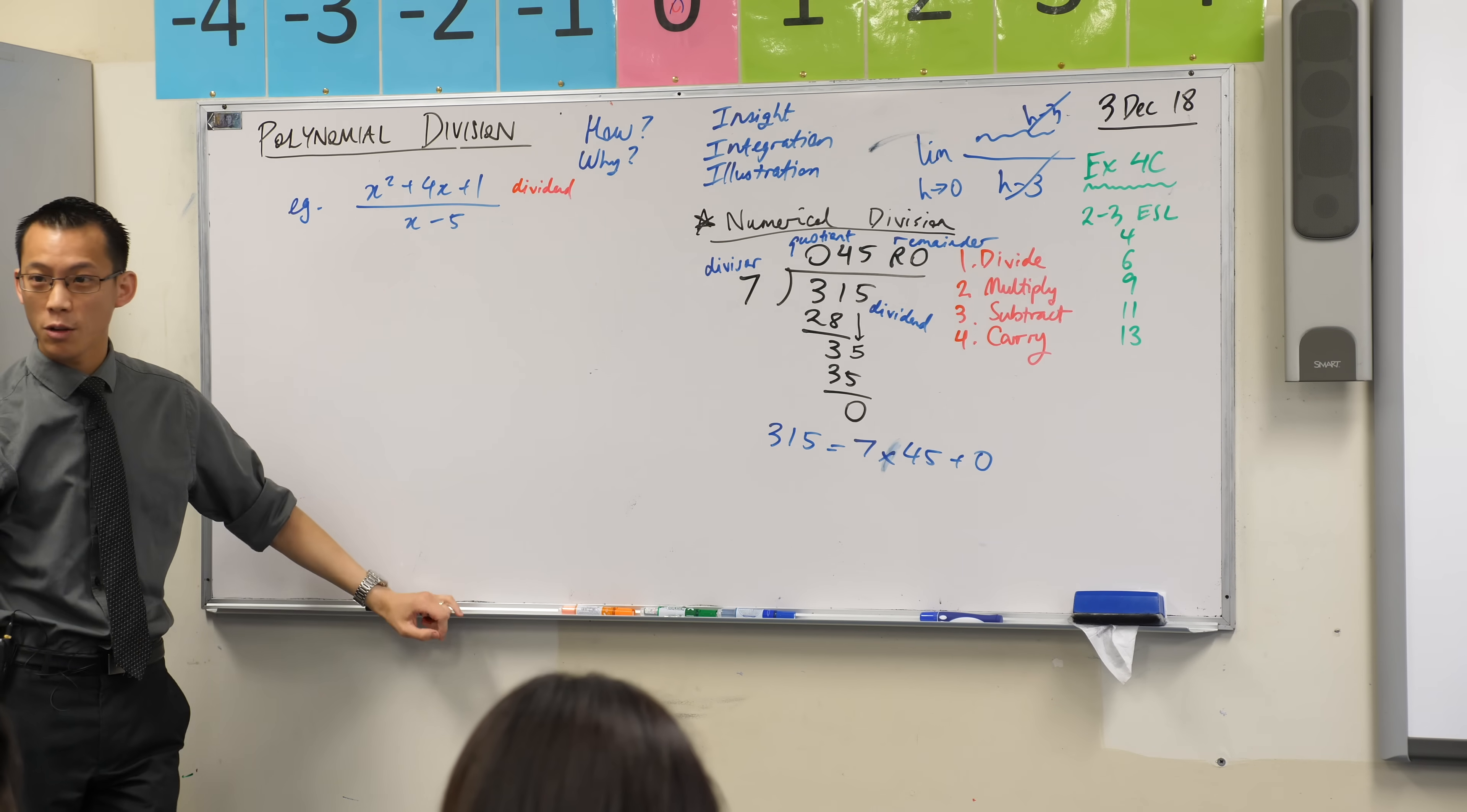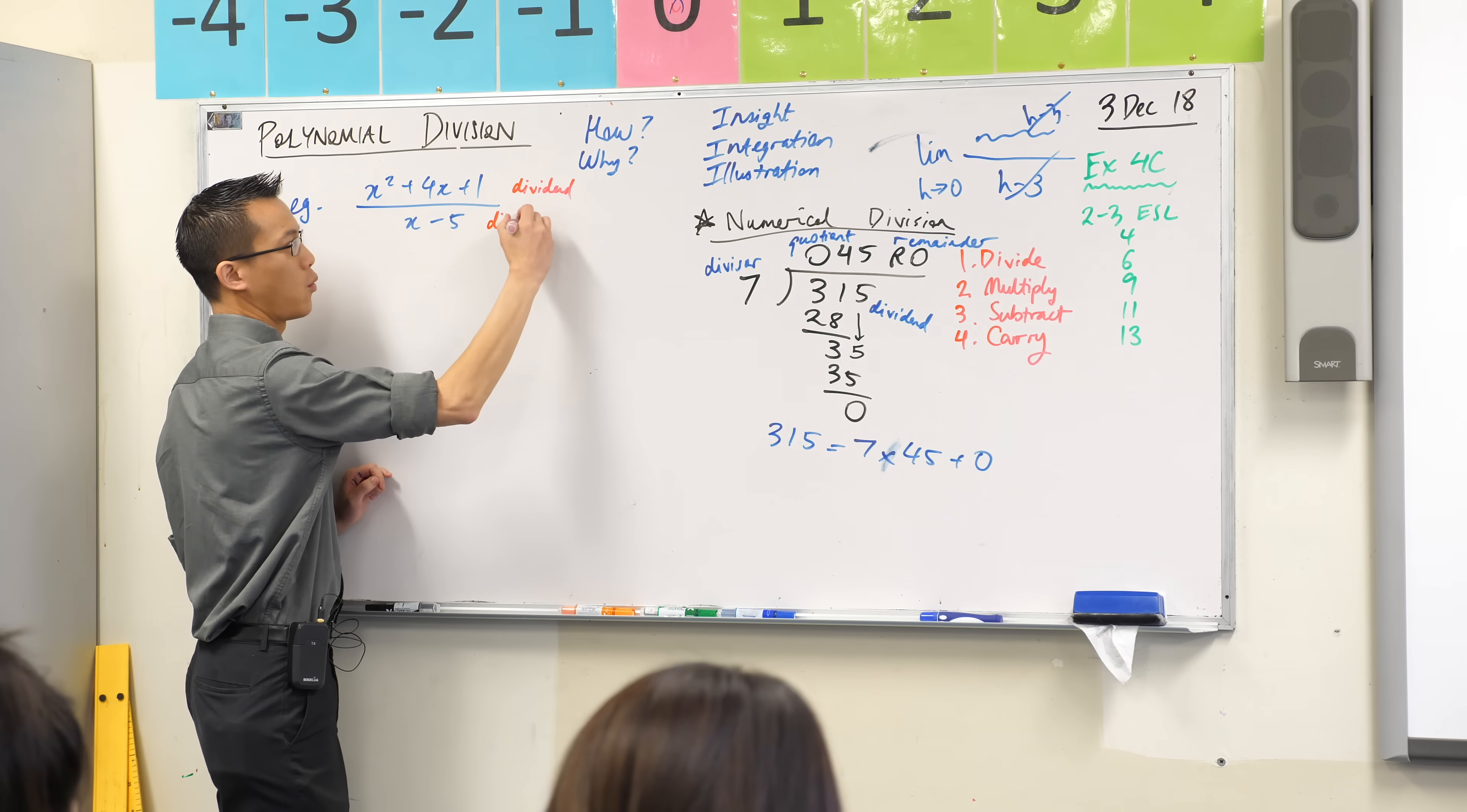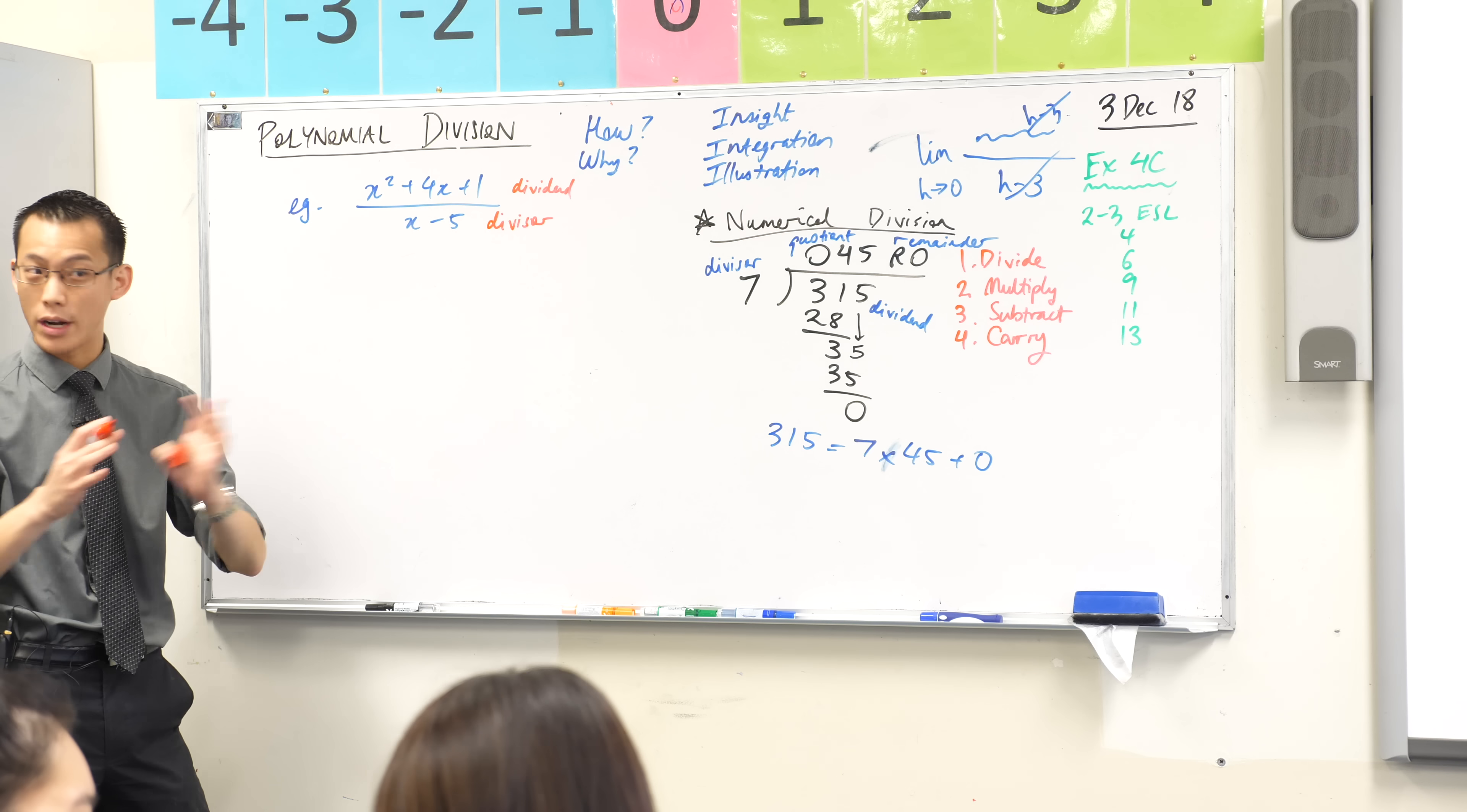This x minus 5 down the bottom, this is the thing doing the dividing, so it's the divisor. So what I'm going to get out of this is a quotient and potentially, most likely, a remainder, whatever that happens to be.